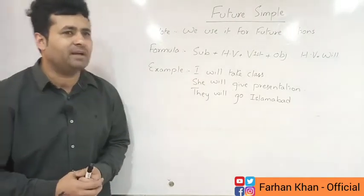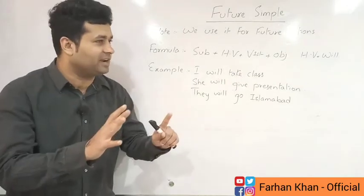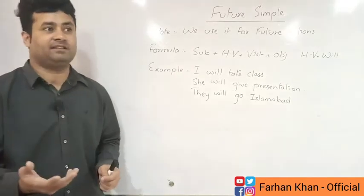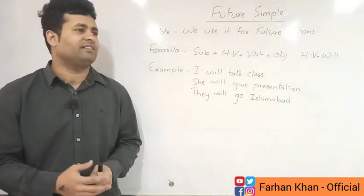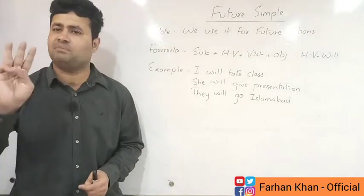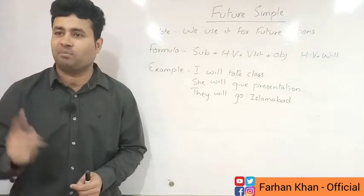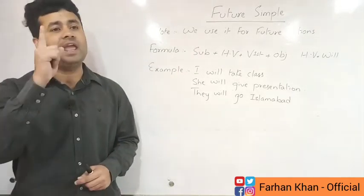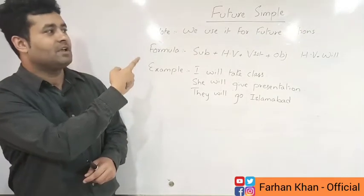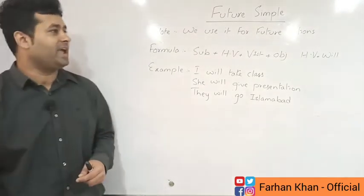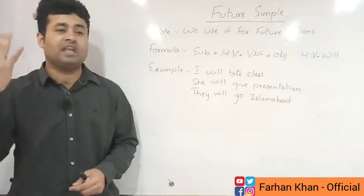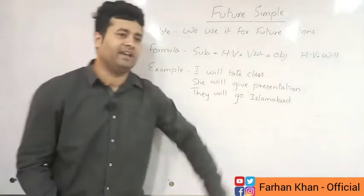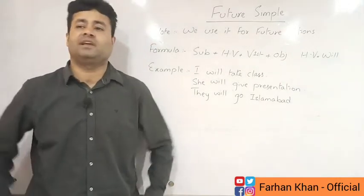I always say that there are 12 tenses in English. If you have a good command of 12, your English will be very good. These 6 tenses are the most important: present simple, present progressive, and present perfect — that's 3 present. Then 2 past: past simple and past progressive. And 1 future: Future Simple. With these 6 tenses you can speak English well.